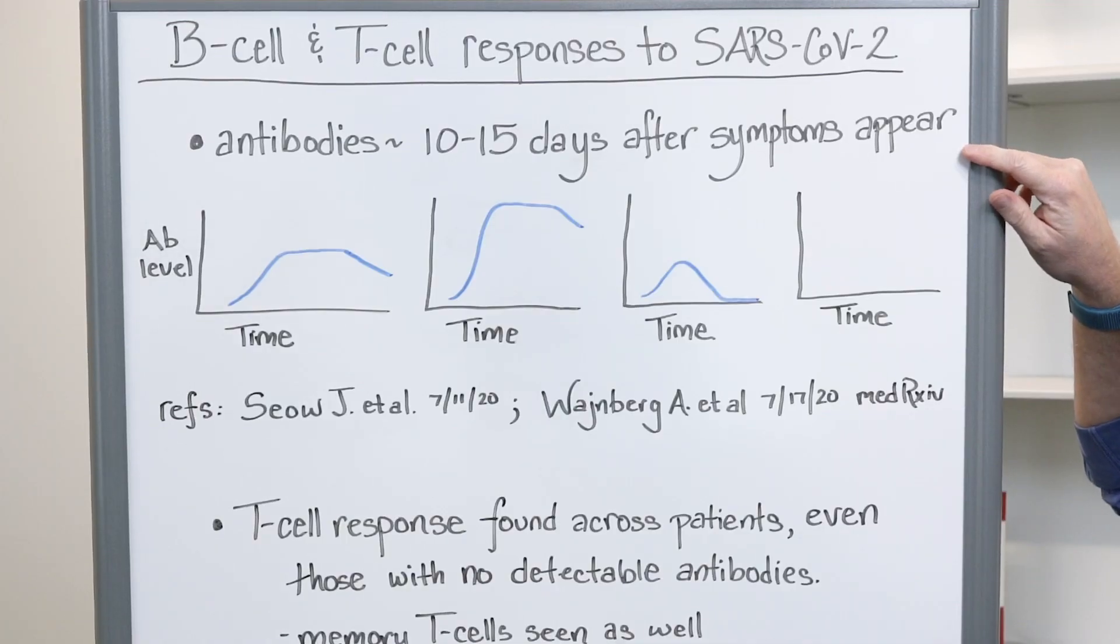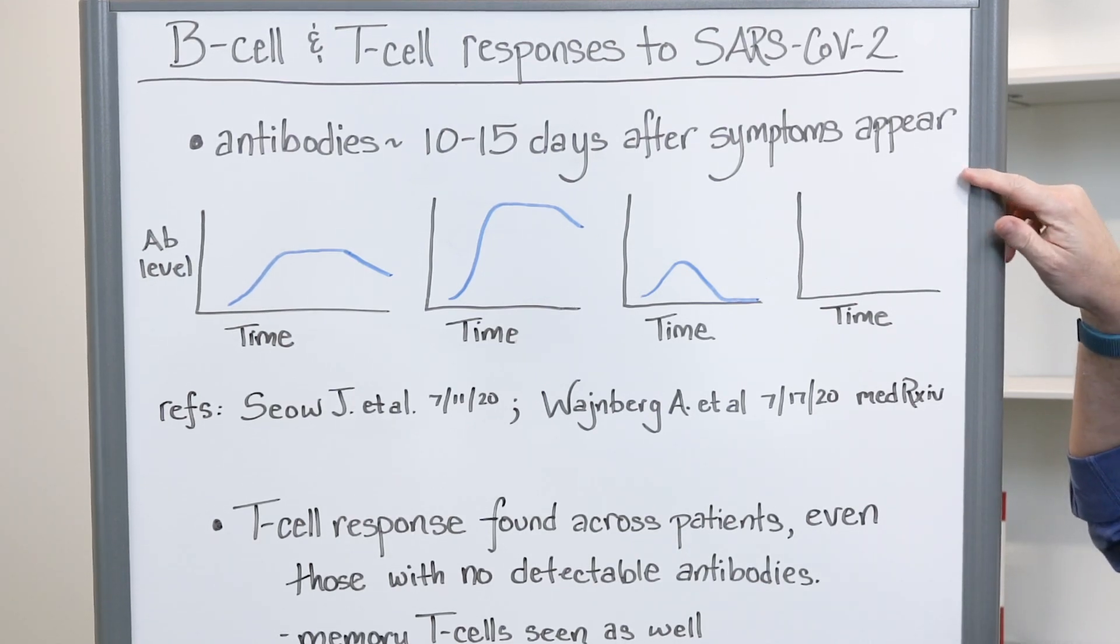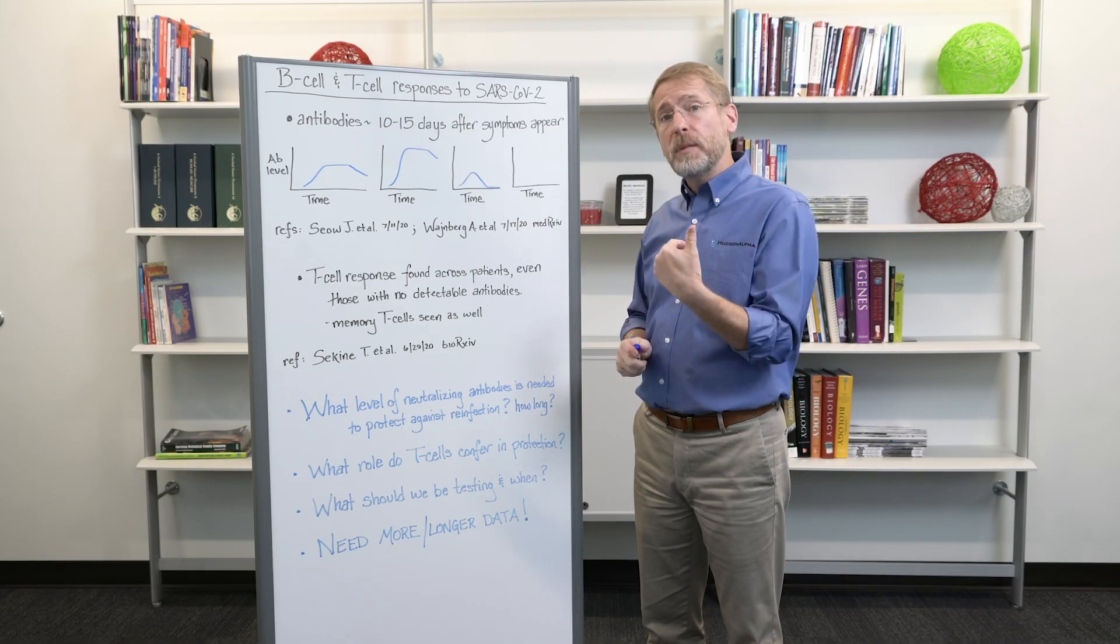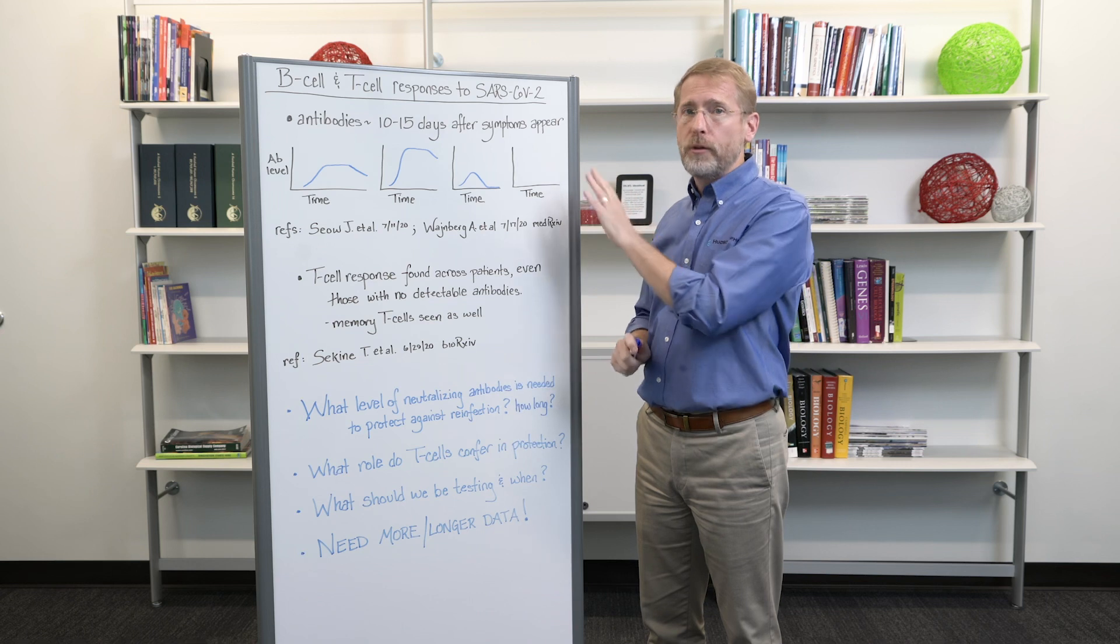All right. So the data suggests that antibodies to the SARS-CoV-2 virus appear about 10 to 15 days after the onset of symptoms. They also appear for asymptomatic individuals, but the timing isn't necessarily fully understood.